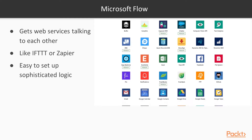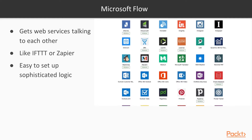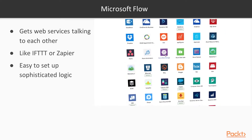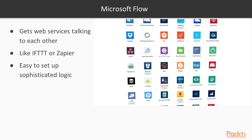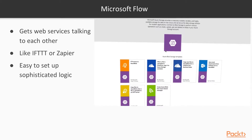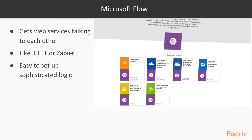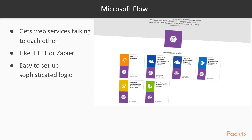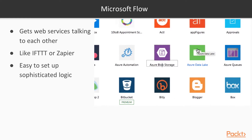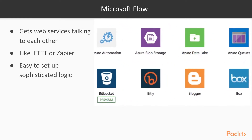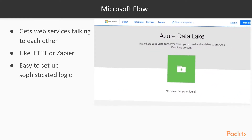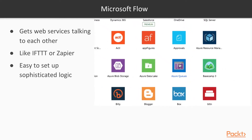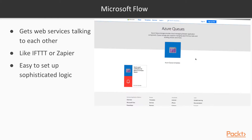Microsoft Flow essentially gets web services talking to each other. It's like IFTTT or Zapier, if you're familiar with those services. It's easy to set up sophisticated logic — for example, you can make your Dropbox trigger something and then respond to it, send an email. There are already recipes for Azure services like Azure Blob Storage, Azure Data Lake, and Azure Queues, so it might be just what you need for your solution.